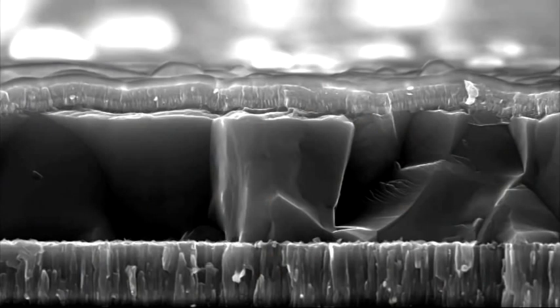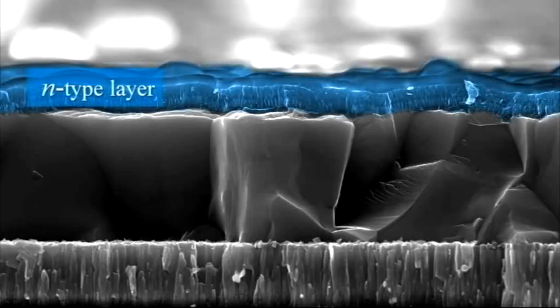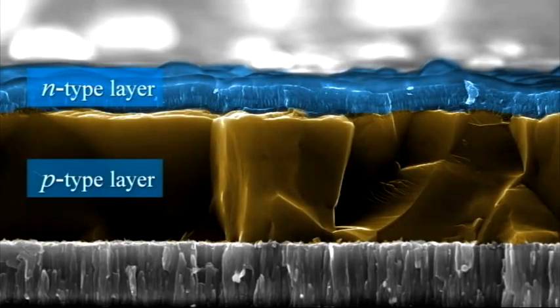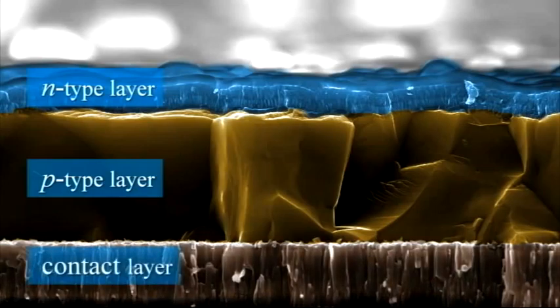The materials then deposit onto a substrate as an extremely thin layer. A number of steps follow, where the layers are modified again and contact layers for the solar cell are added, for example.